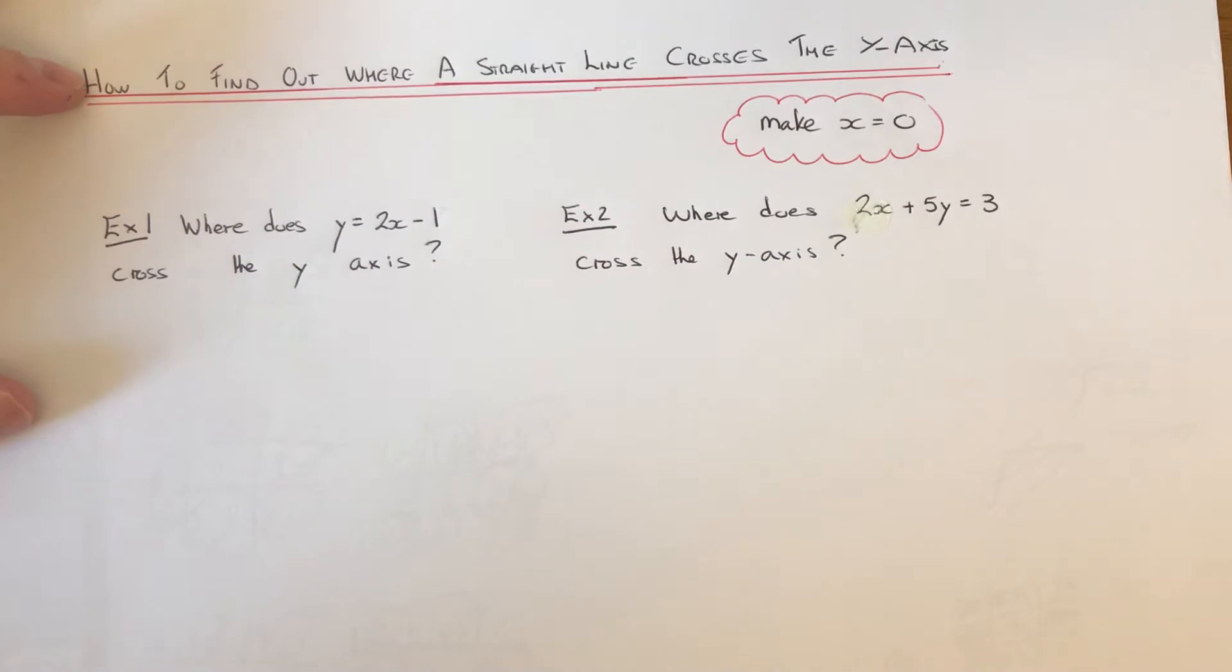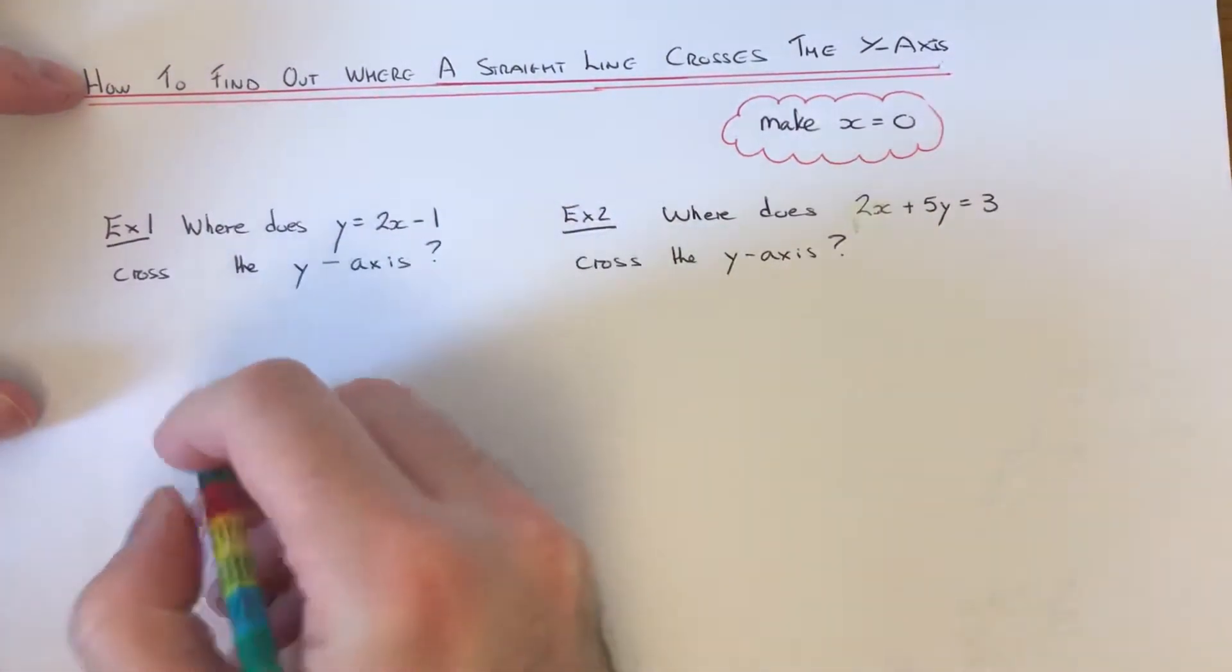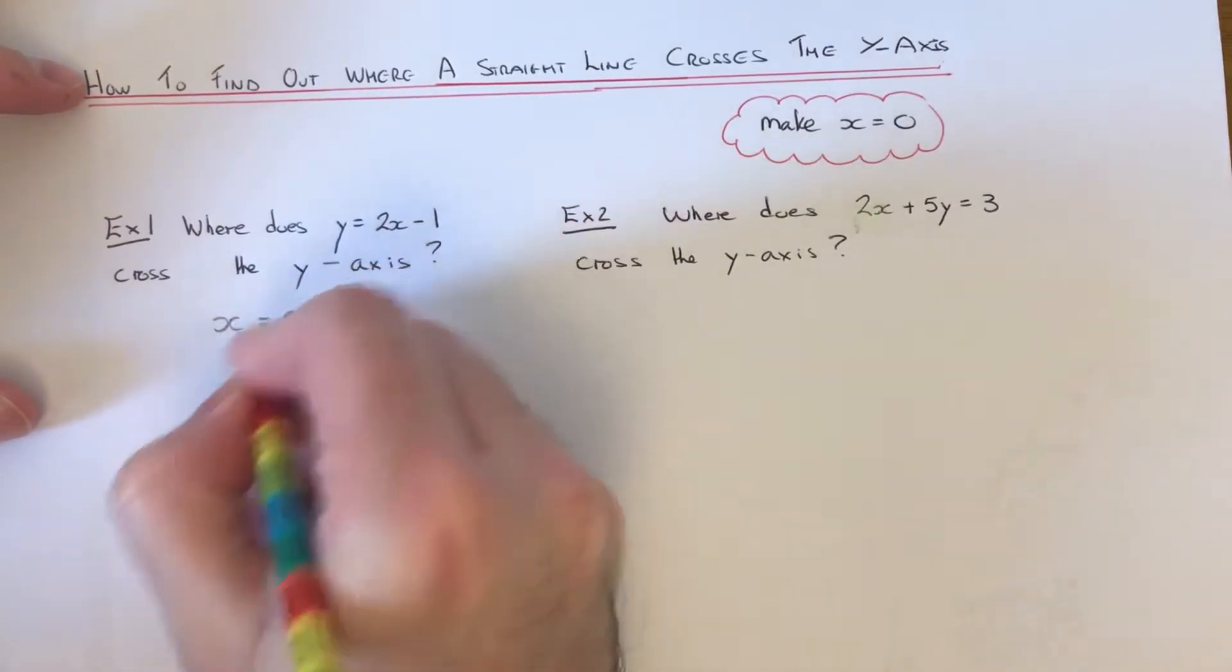So let's have a look at the two examples here. Where does the line y equals 2x minus 1 cross the y-axis? So we just need to make x equals 0.